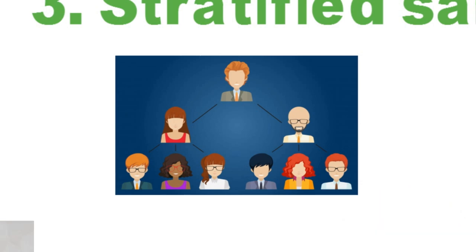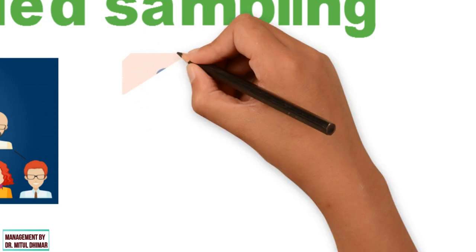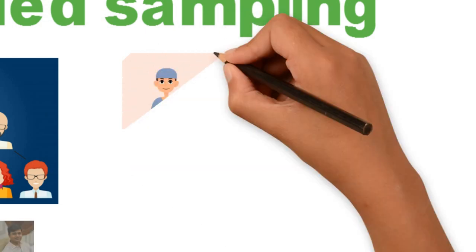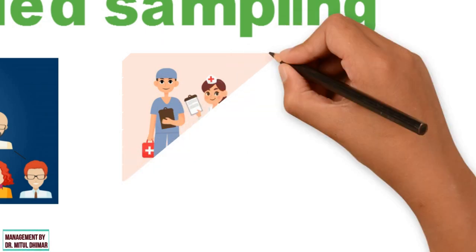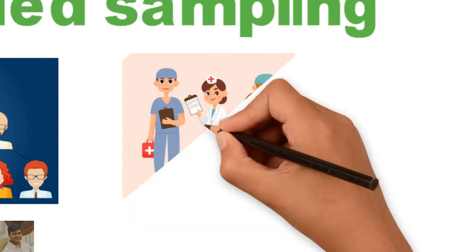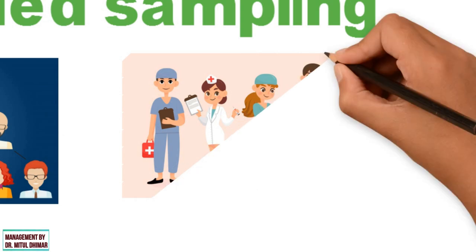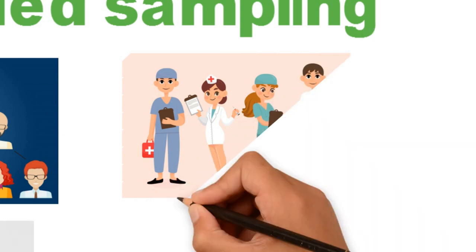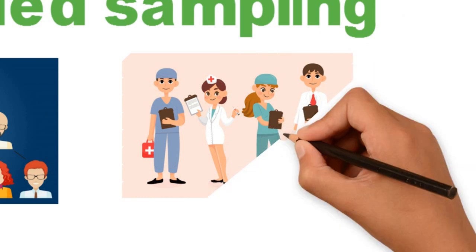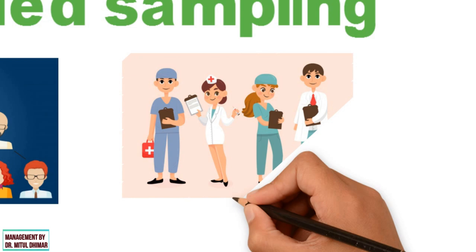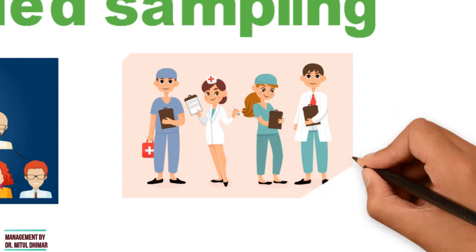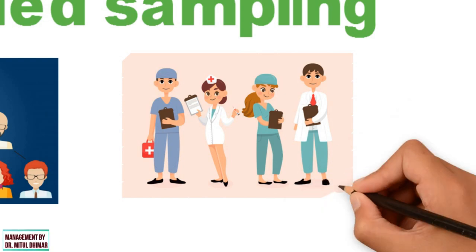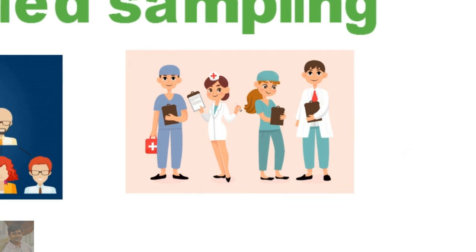For example, in a study of health outcomes of the nursing staff in a country, if there are three hospitals each with different numbers of nursing staff — Hospital A has 500 nurses, Hospital B has 1000, and Hospital C has 2000 — it would be appropriate to choose the sample number for each hospital proportionately. For example, 10 from Hospital A, 20 from Hospital B, and 40 from Hospital C. This ensures a more realistic and accurate estimate of nurses' health outcomes across the country.